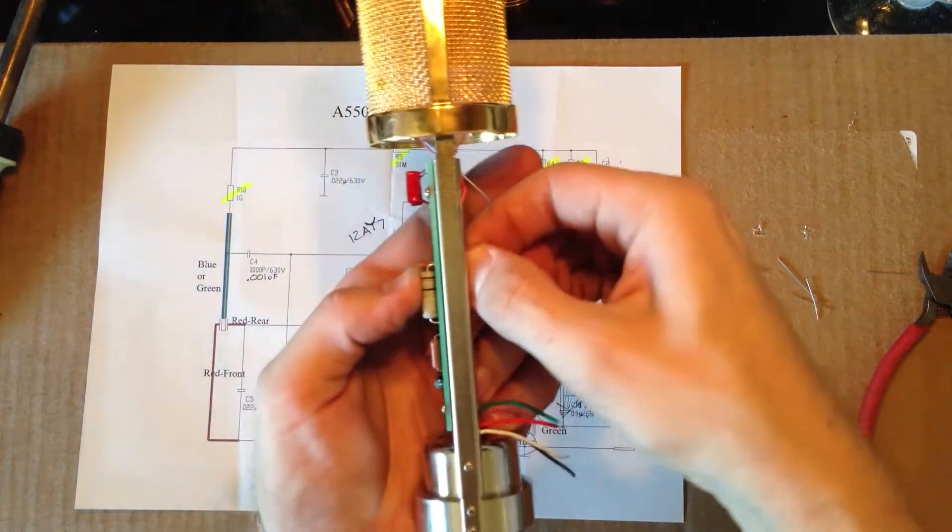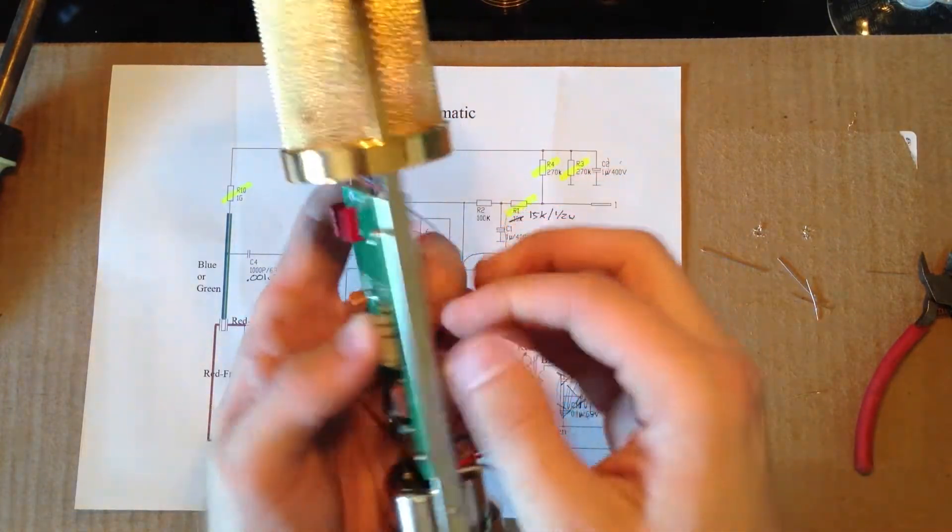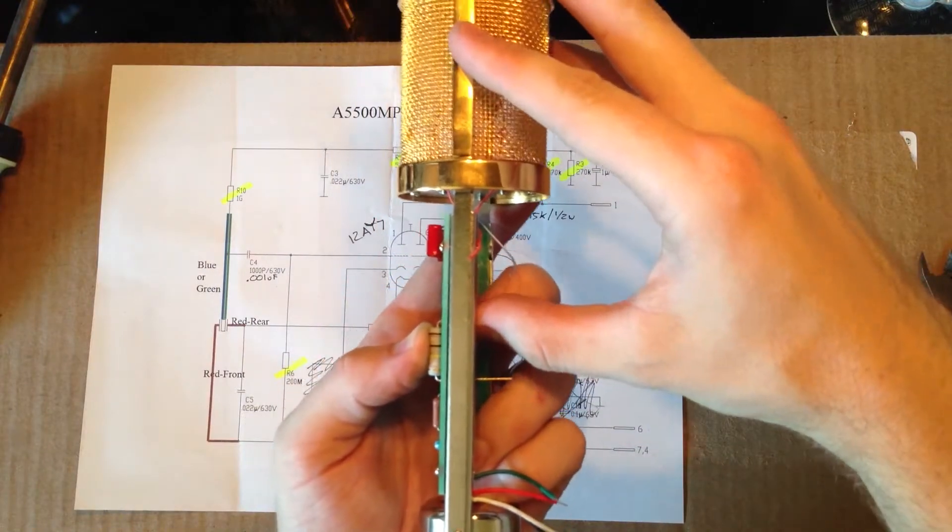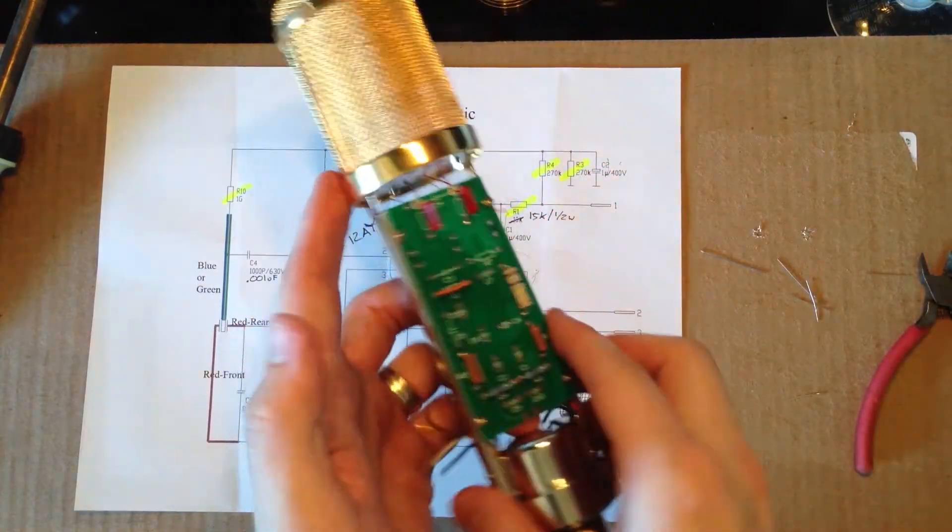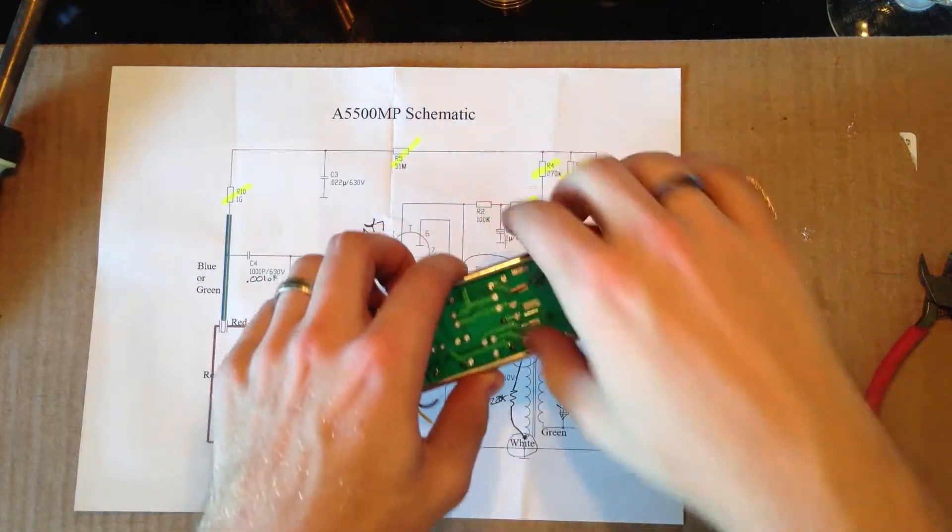And on the back side, you can pull the leads. And once it's placed, you'll want to bend them. And we'll flip this over and go ahead and solder those in.